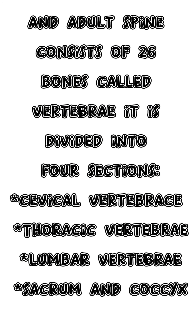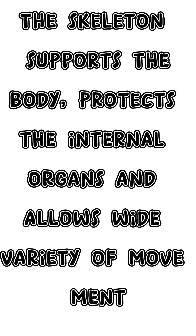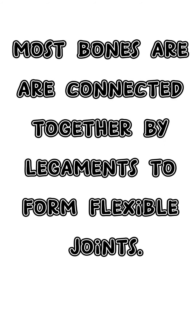An adult's spine consists of 26 bones called vertebrae and is divided into four sections. The skeleton supports the body, protects the internal organs, and allows a wide variety of movements. Most bones are connected together by ligaments to form flexible joints.